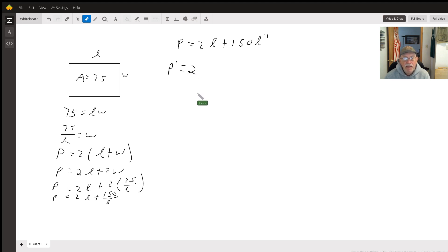I'm going to get the derivative of P is going to equal 2 minus 150L to the negative 2 power. When I take the derivative of 150 times L to the negative 2 power, I'm going to write that as an exponent now just to make my life a little easier. This is going to be L squared down here now.